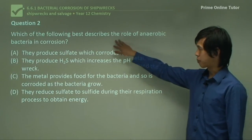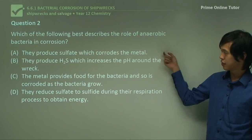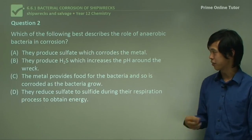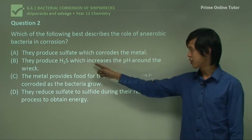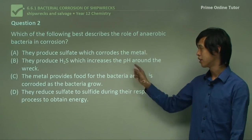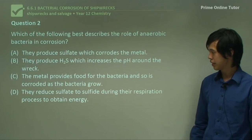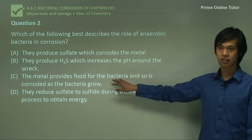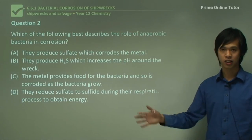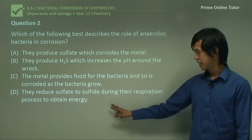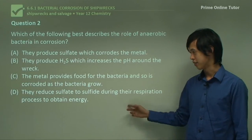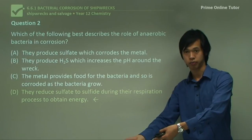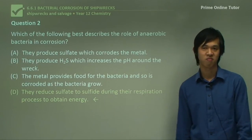Question two: which of the following best describes the role of anaerobic bacteria in corrosion? Option A — they produce sulfate — is wrong because we told you they absorb sulfate to produce energy. Option B — they produce H2S which increases the pH around the wreck — is subtle but wrong: they do produce H2S but it increases the acidity and decreases the pH. Option C — the metal provides food for the bacteria — is not quite right; they don't eat steel. Option D — they reduce sulfate to sulfide during their respiration process to obtain energy — is the correct answer. All they're doing is taking in sulfate and reducing it to sulfide to produce energy, and the byproduct happens to corrode the steel.